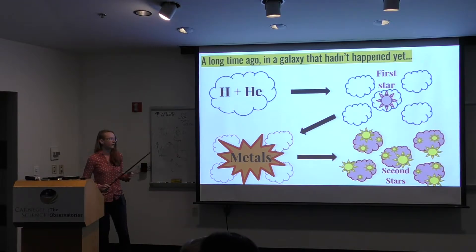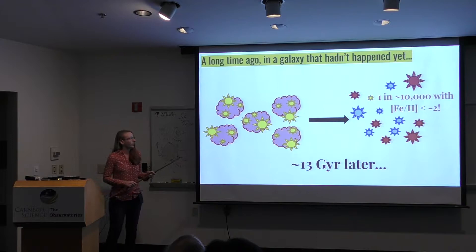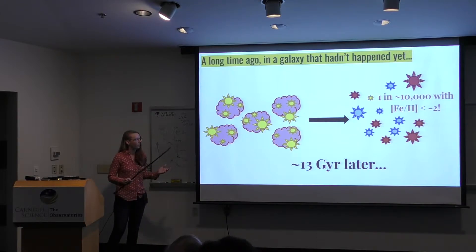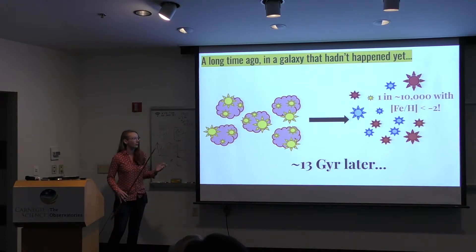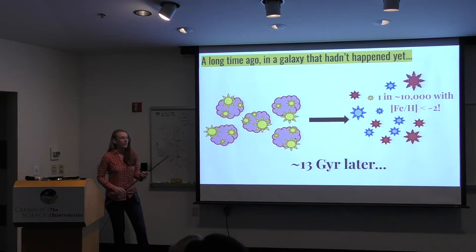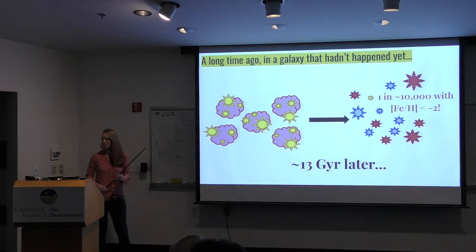This is where the second generation of stars is born. The second generation of stars has its own mysterious mass function that we don't quite know about, but 13 gigayears later, most of them have gone supernova and died. So if you look at the galaxy today, only about 1 in every 10,000 to 1 in every 100,000 stars has a metallicity below minus 2.